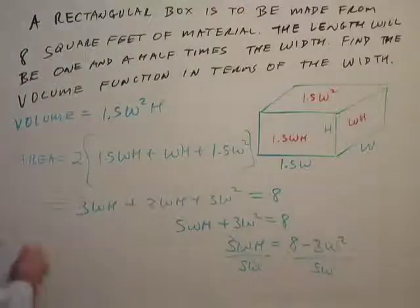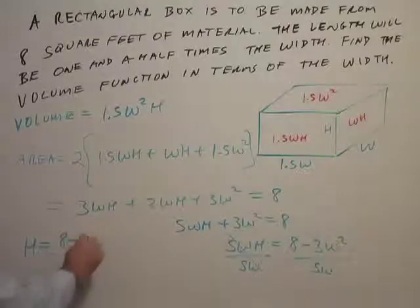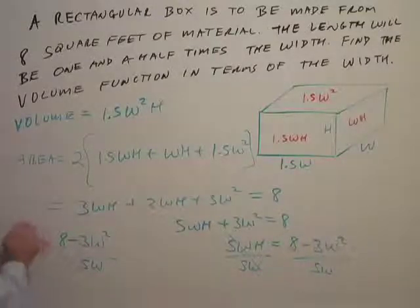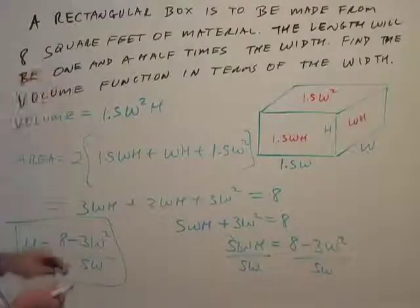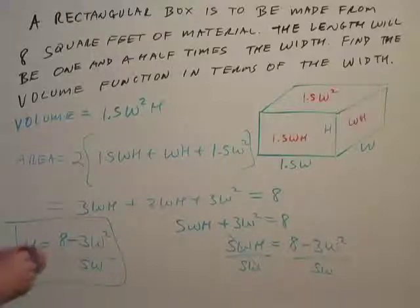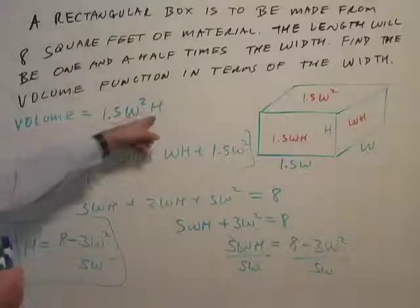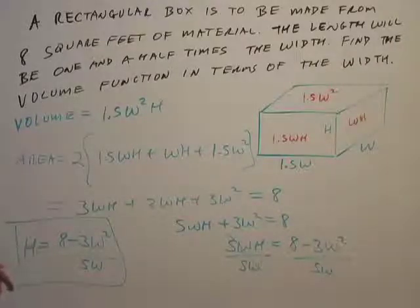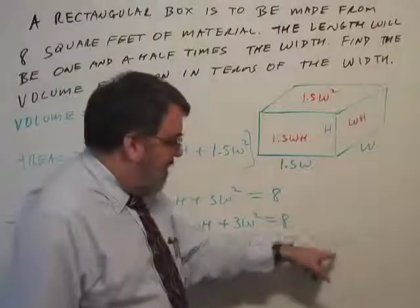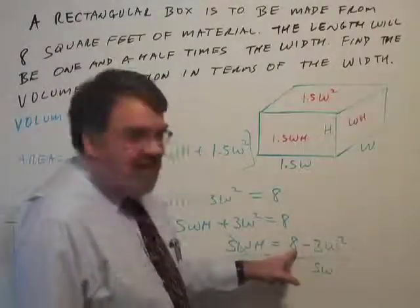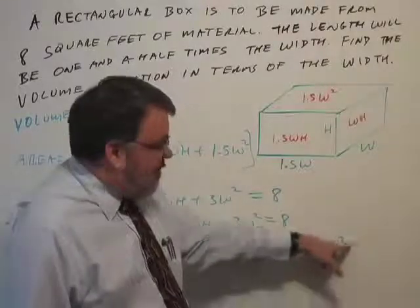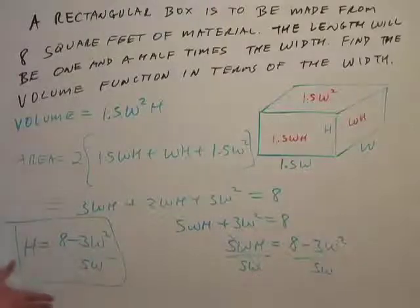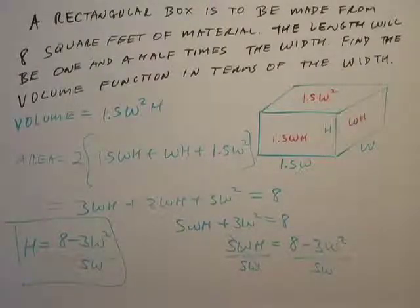So H, or height, is going to be 8 minus 3W squared over 5W. So our constraint, the area constraint, is what allowed us to solve for height in terms of width. And now we can finish the problem by just substituting here. I'm just marveling that this came out so nice with the decimals there. Whatever you do, don't cancel the W's here. That W divides into 8 as well as the negative 3W squared. So if you cancel W with W squared, you're forgetting the fact that W is also dividing into 8. So that would be a big mistake to attempt to simplify that. That's not simplifying, that's screwing up. We have to leave it like this.